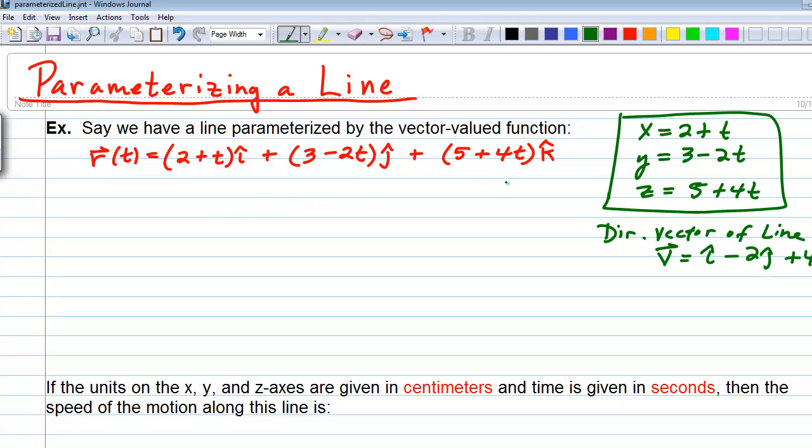It's sort of interesting that in this case, because of the fact that we have this sort of constant rate of speed as we're moving, that if you determine the velocity vector, v of t, for this function, which we of course know is r prime of t, we end up with derivative of 2 plus t is 1, so we get just i, and then the derivative of 3 minus 2t is minus 2j, and the derivative of 5 plus 4t is 4, so plus 4k. And if we compare this with what we had for our direction vector of the line, it turns out, in this case, because of our constant speed, that we end up with the same thing.